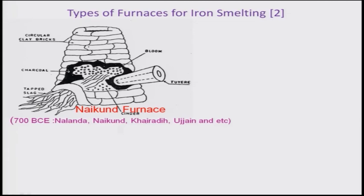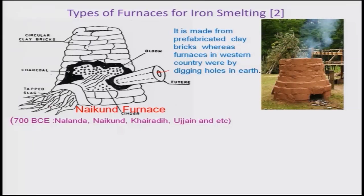The Naikund furnace, also found at Khairadi and Ujjayi, is a very simple furnace using clay bricks. There is a tuyere which basically supplies air to be drawn in, with charcoal inside along with iron blooms, and slag passes out through the passage. It is made from prefabricated clay bricks, whereas furnaces in western countries were made by digging holes in the earth.